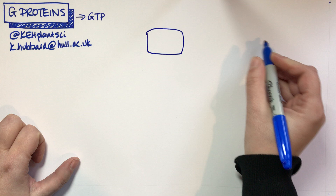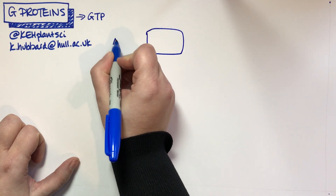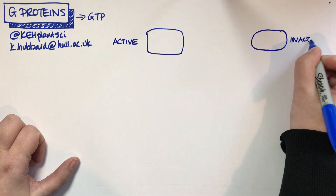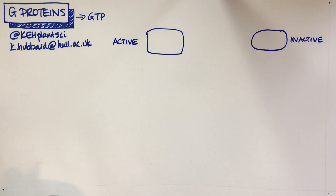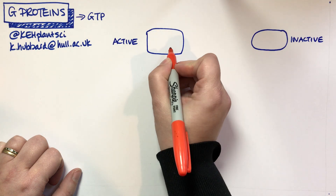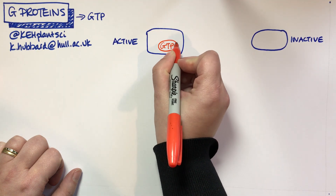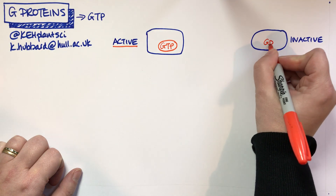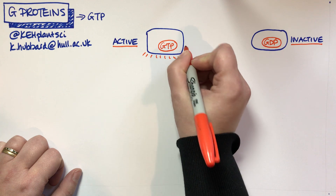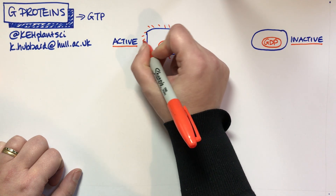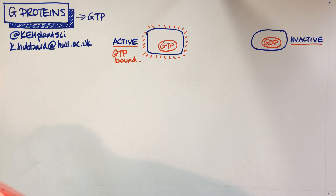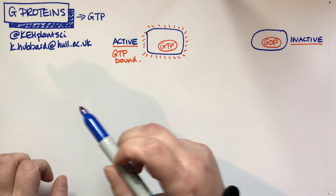Our G protein has two states: an active state and an inactive state. Which state it is in depends on whether it's bound to GTP or GDP. GTP is the active state; GDP is the inactive state. So the active version is GTP-bound. The question then is: how do we switch between the active and the inactive form?